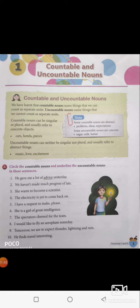Countable nouns can be singular or plural and usually refer to concrete objects — for example, cars, hotels, pieces. Whereas uncountable nouns can neither be singular nor plural and usually refer to abstract things like music, love, excitement, enjoyment and so on. They are usually considered as uncountable nouns.